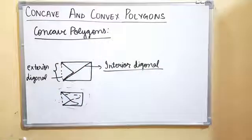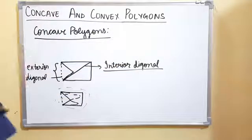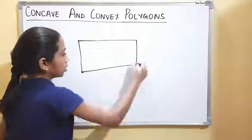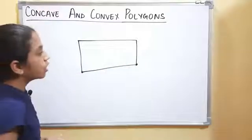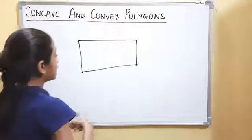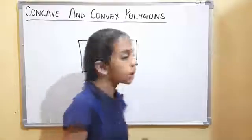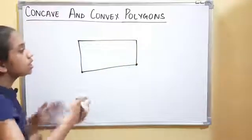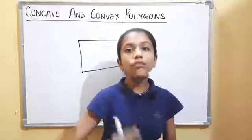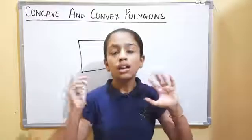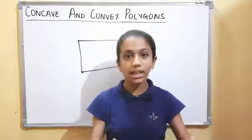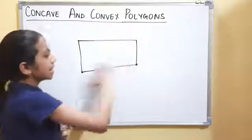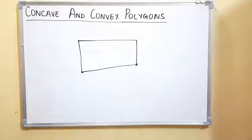Now I want to clarify: can this line segment be called a diagonal? No — this line segment is not a diagonal because it joins two consecutive vertices. A diagonal is a line segment that connects two non-consecutive vertices. So this line segment is not a diagonal.